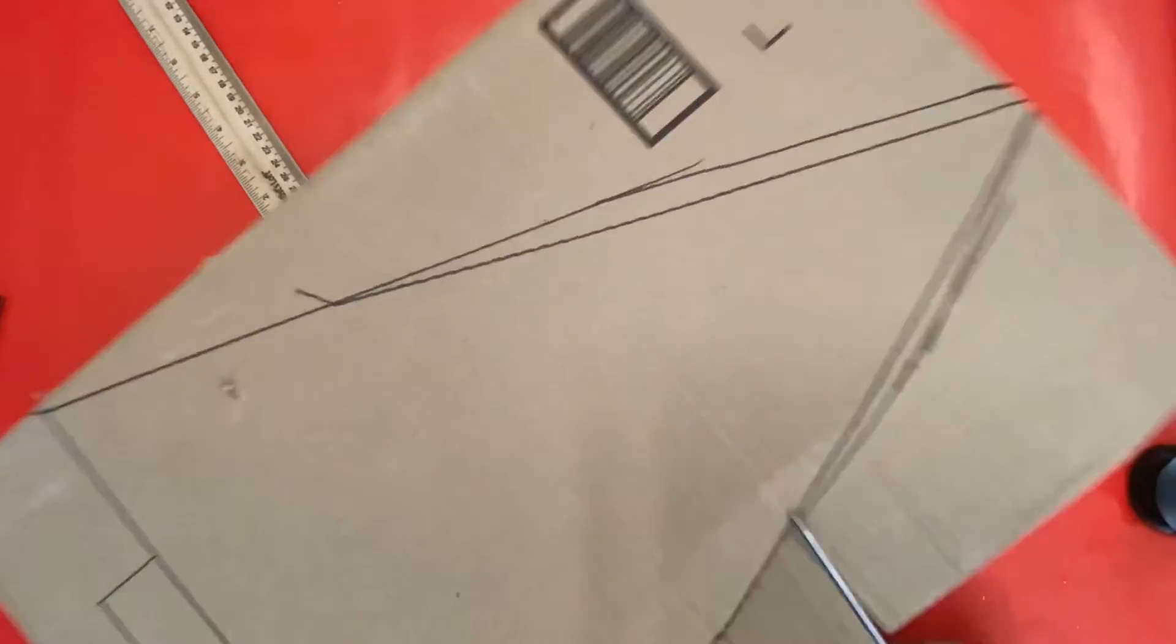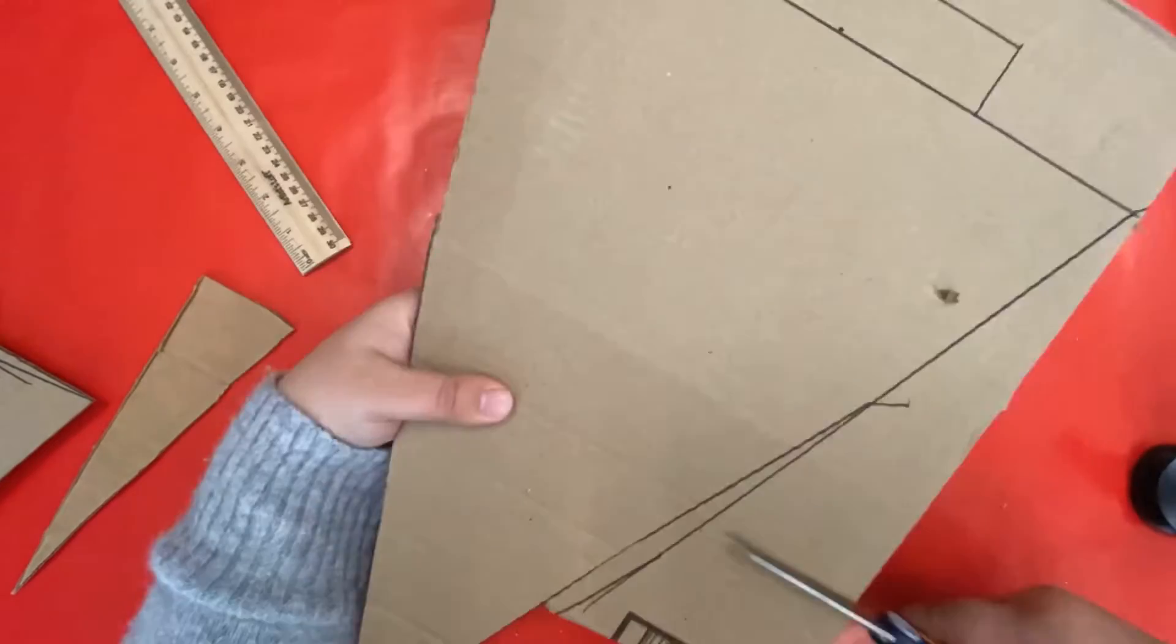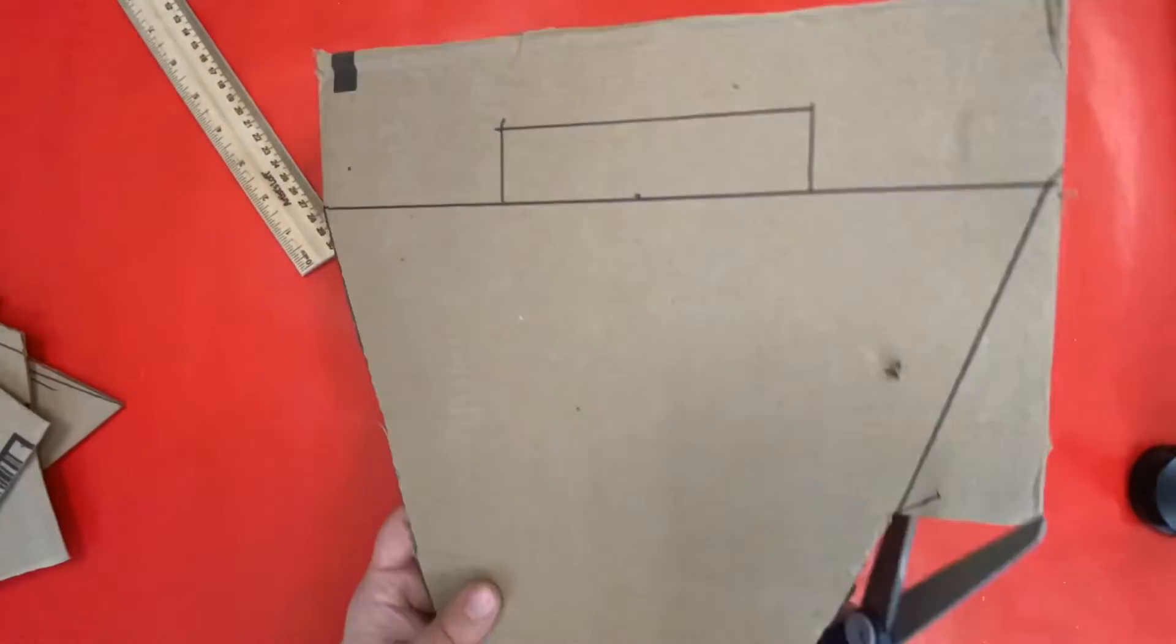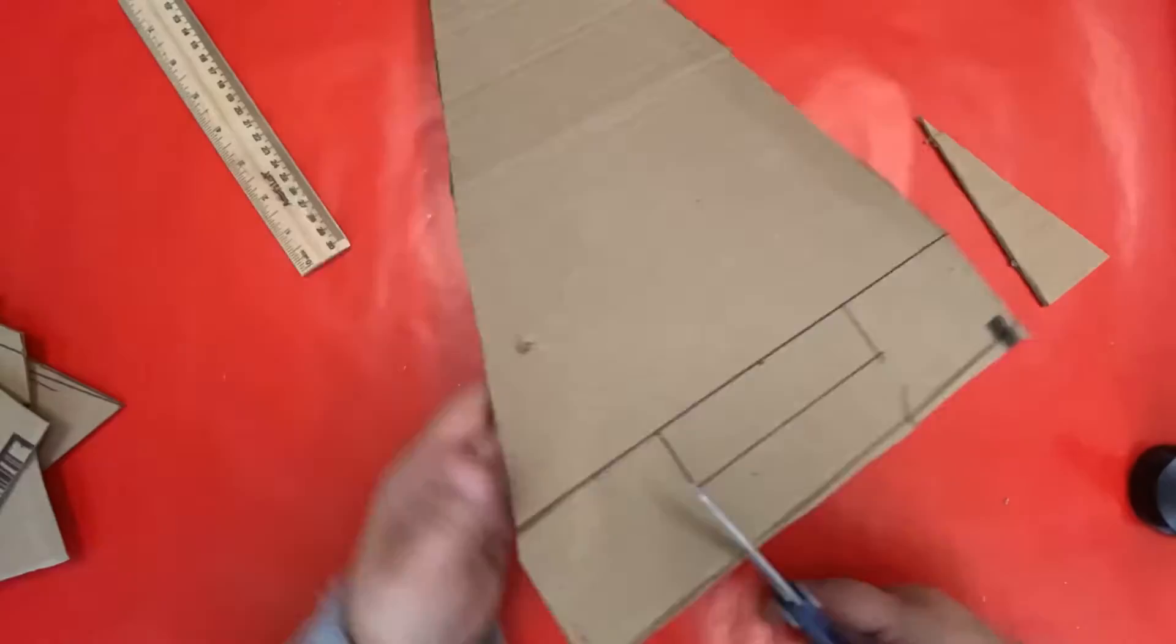You can use box cutters or scissors. If you're using scissors, I recommend cutting a little bit and then going in from the side and cutting a little bit off there, just so you don't have excess cardboard hanging on and making it hard to cut.